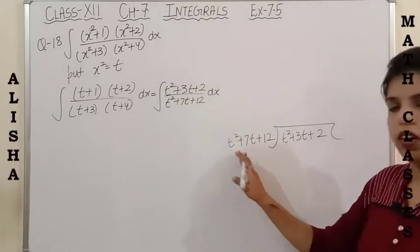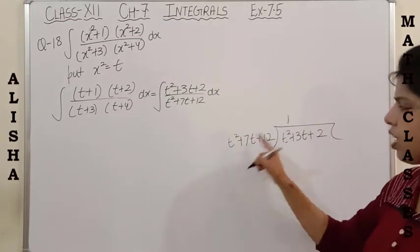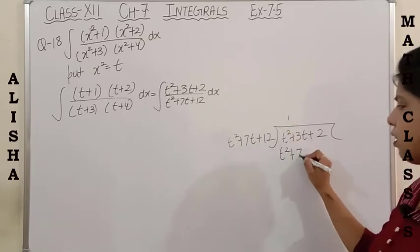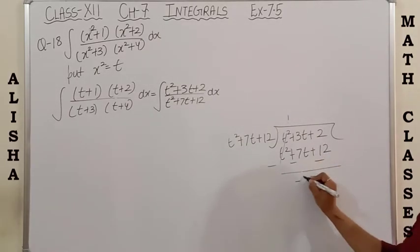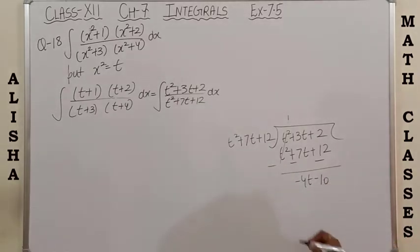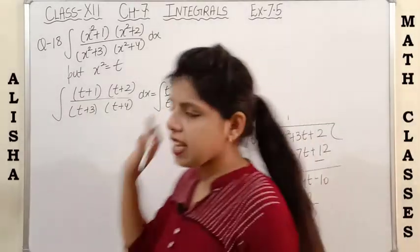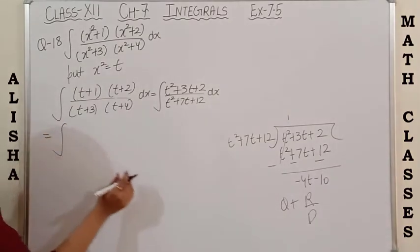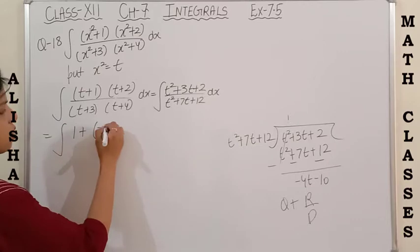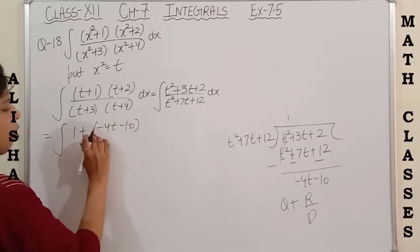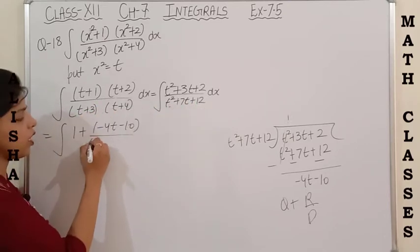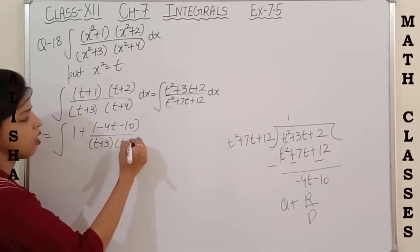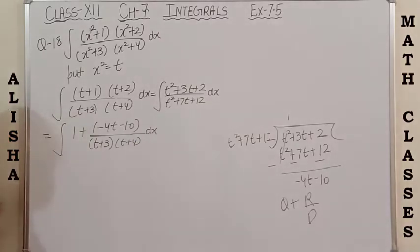When I divide t² by t², I get 1. So multiplying: t² gives t², 7t gives 7t, and 12 gives 12. Subtracting, I get a remainder of −4t − 10. So using the formula q + r/d (quotient plus remainder upon divisor), I write this expression as 1 plus (−4t−10) upon the divisor. We don't write the divisor as a quadratic — it's better to write it in factored form, because further we have to use the partial fraction method.